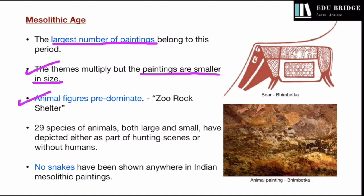Animal figures predominate in the paintings during the Mesolithic period. One particular shelter known as the Zurok shelter got its name because of the predominance of animal figures in that cave. A total of 29 species of animals have been depicted — both large and small — either as part of hunting scenes or on their own in the wild.